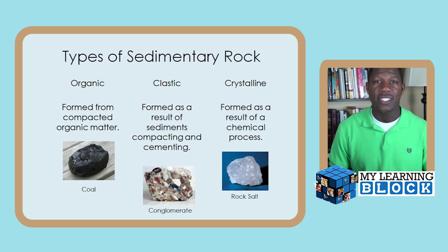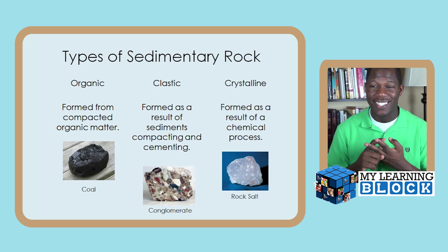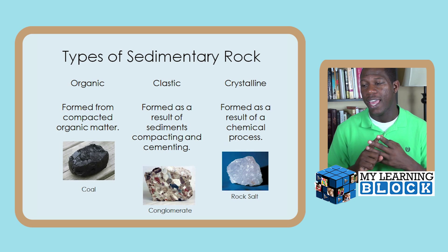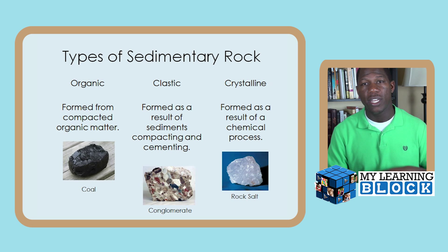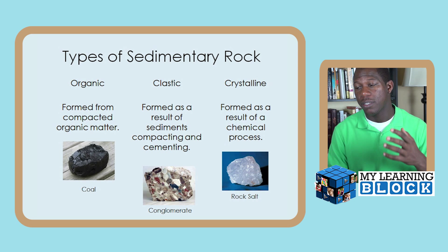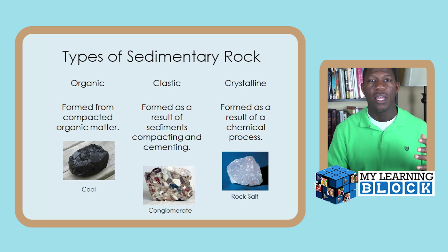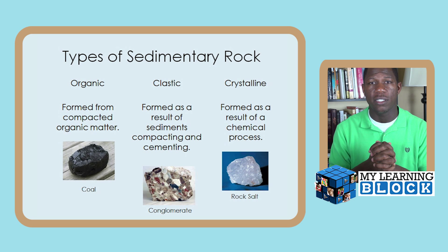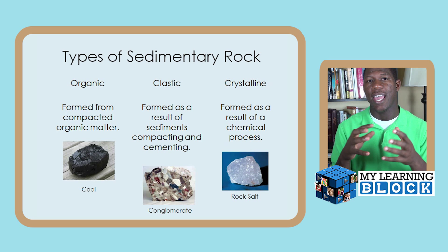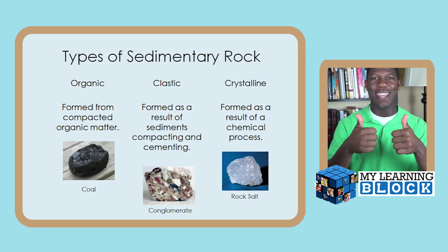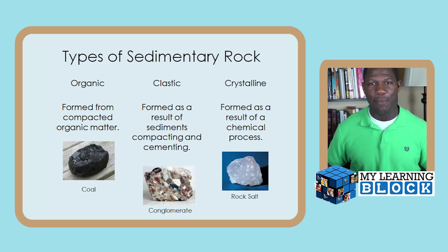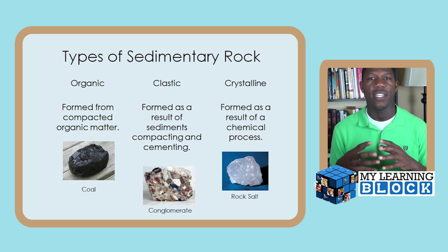There are three major types of sedimentary rocks: organic, clastic, and crystalline. When we talk about organic, we're talking about things like coal. Coal is a sedimentary rock formed from organic matter — meaning it was living at one time. Coal is formed from the remains of plants, and even cooler, diamonds come from coal, which makes diamonds a metamorphic rock.